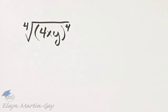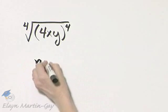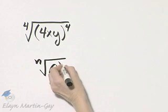Let's simplify this expression, and we need to insert absolute value bars when necessary. If you'll recall, if I have the nth root of a raised to the nth power,